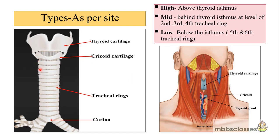The trachea is a non-collapsible membrano-cartilaginous tube that extends from the lower border of the cricoid cartilage, approximately at the level of C6 vertebra, to the lower border of T4 vertebra, where it divides into the right and left principal bronchi. Its length is approximately 4 to 6 inches. The cervical trachea lies in the neck, and the thoracic trachea lies in the superior mediastinum. There are about 16 to 20 tracheal rings.